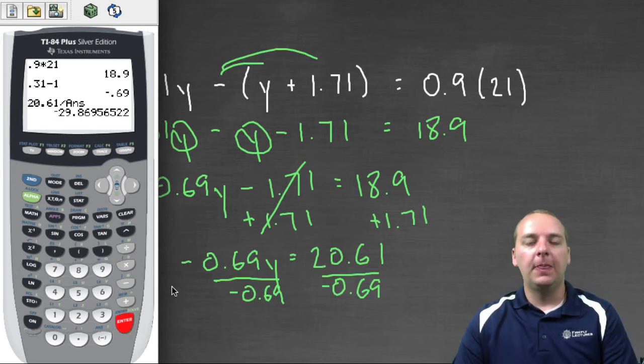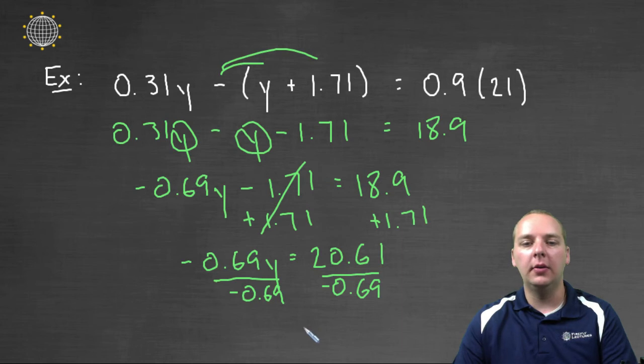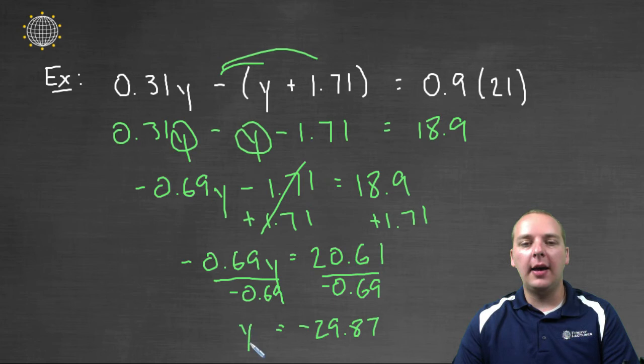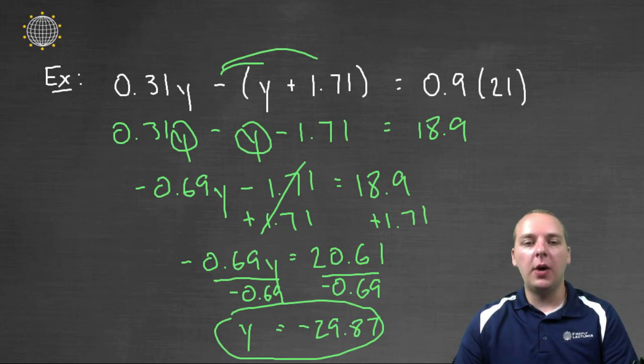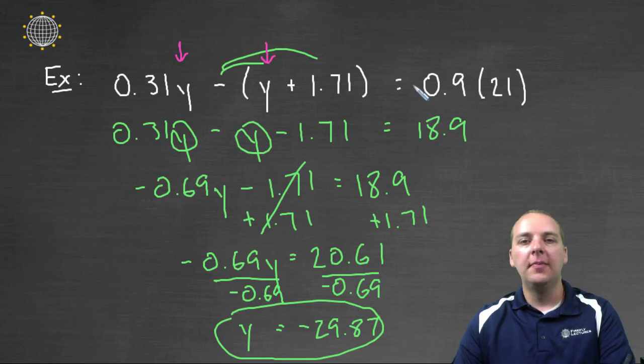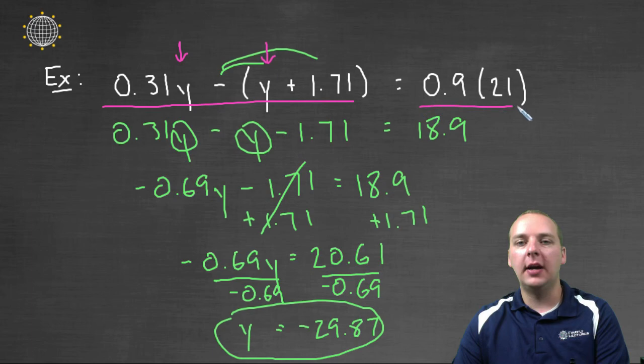And we'll get -29.8695. We'll round this to -29.87. So we did round that, so this answer is technically an approximation because we rounded it. But basically you should be able to take this for y and plug it back in all the y's in the original equation, and it should make the left side match the right side if done correctly.